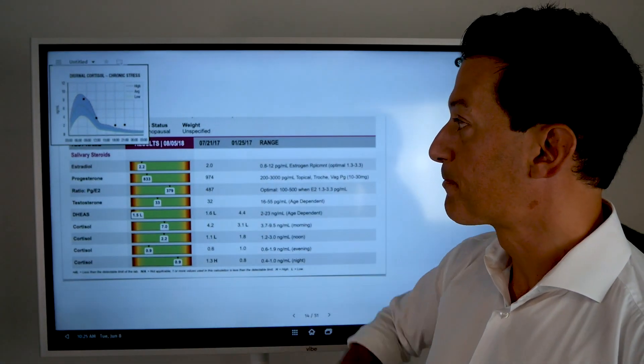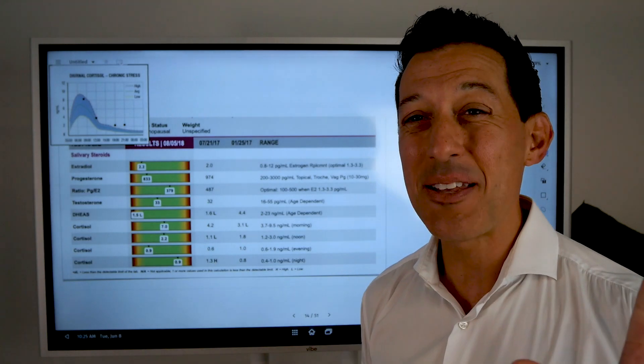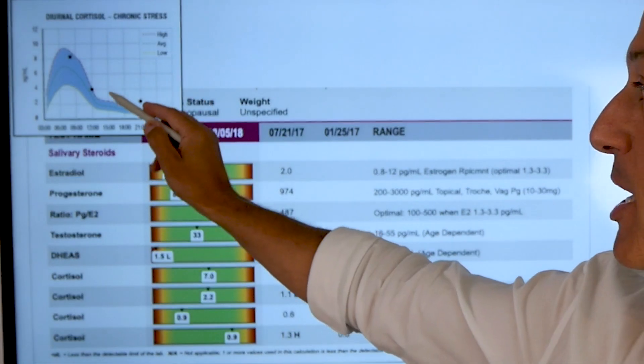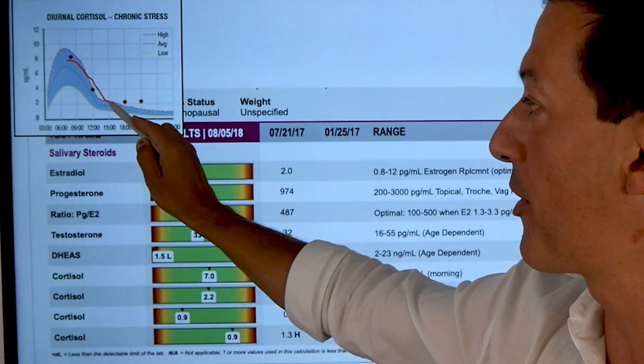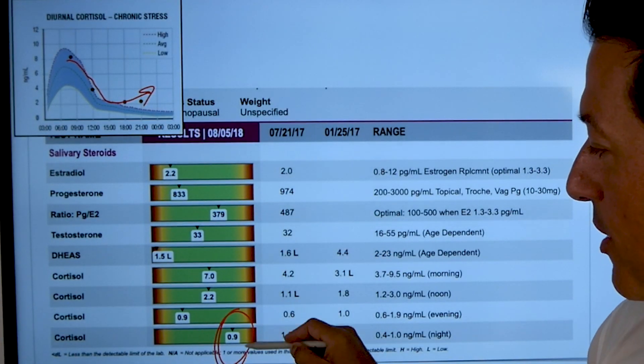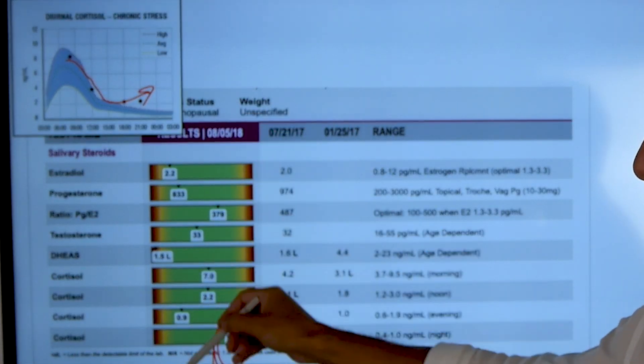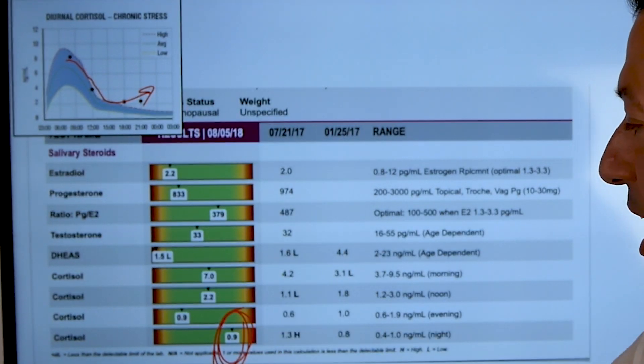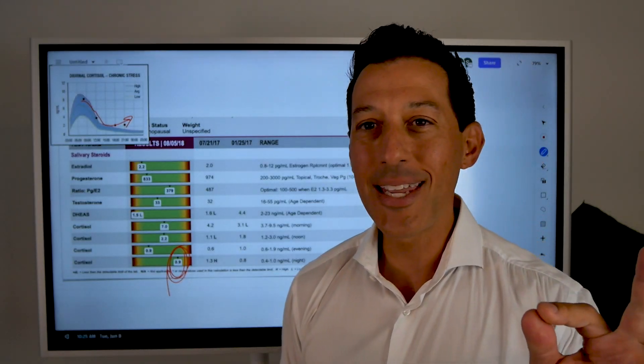Here's the lab right here. You can actually see this is many people in my practice. They've got normal cortisol and all of a sudden at night, they're out of range. You can see it. Look at this right here. This is their evening cortisol. This is a stress hormones mood metabolism test. Look at that. It's a 0.9.